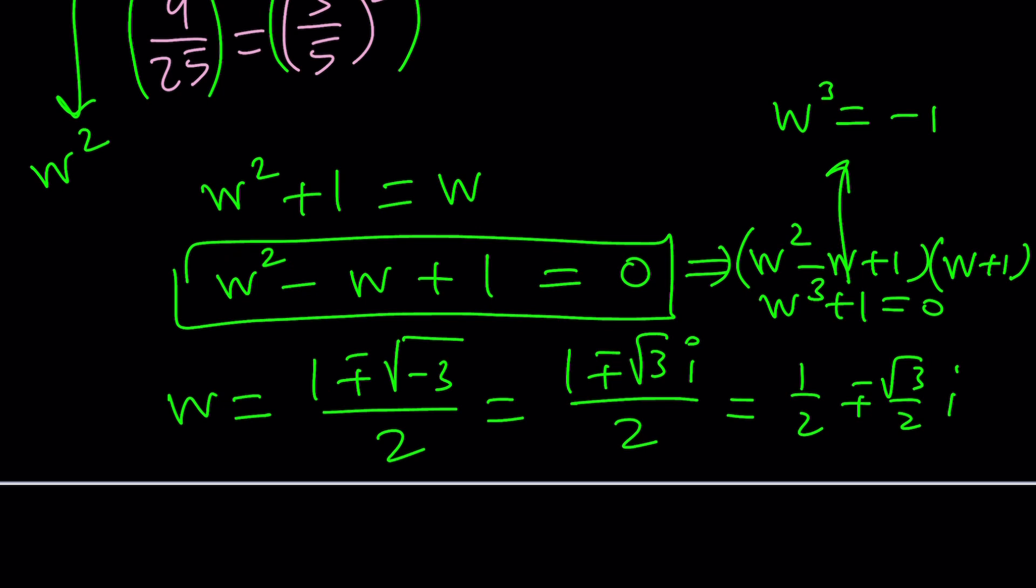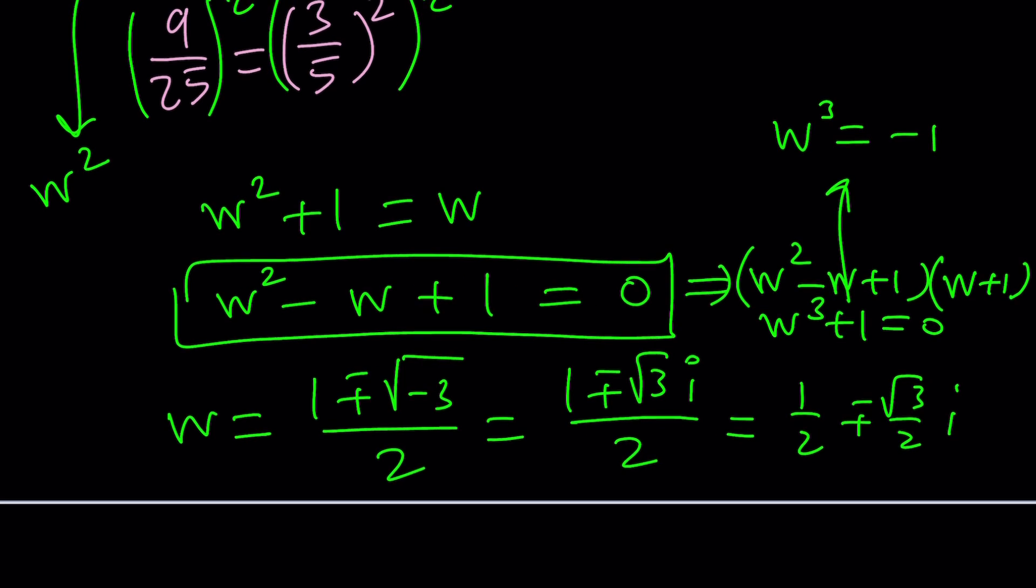So we're basically dealing with cube roots of negative 1 besides negative 1. Make sense? So those are the solutions. If you cube one of these numbers, you'll get negative 1. You can check it out, okay?